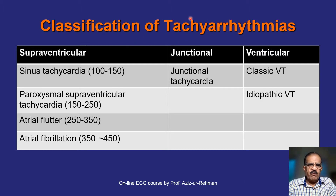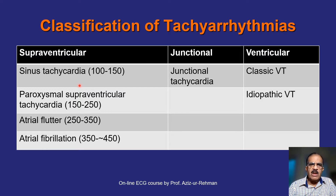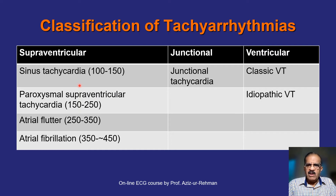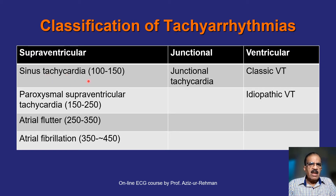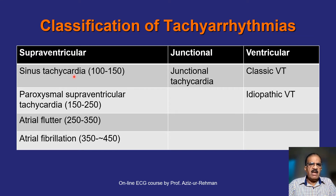In the broad classification of tachyarrhythmias, supraventricular tachycardia includes sinus tachycardia, which may be purely physiological — such as during exercise, fever, or anxiety. There is also a condition called inappropriate sinus tachycardia, where the heart is fast without any physiological stress, which may be a morbid condition.